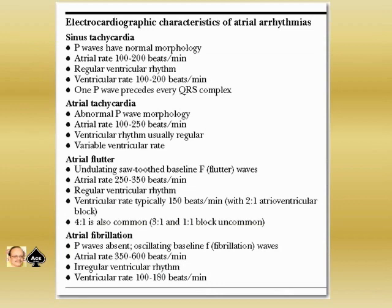The electrocardiographic characteristics of atrial arrhythmias: criteria for sinus tachycardia — the P-wave has normal morphology; atrial rate is 100 to 200 beats per minute; regular ventricular rhythm; ventricular rate is also 100 to 200 beats per minute, meaning the P-rate equals the R-rate; the P-P interval and R-R interval will help you; and one P precedes every QRS complex. So that is sinus tachycardia.